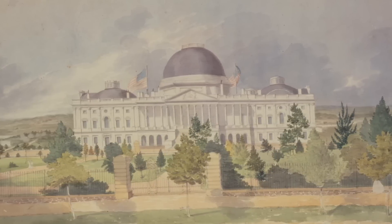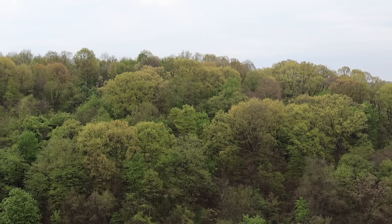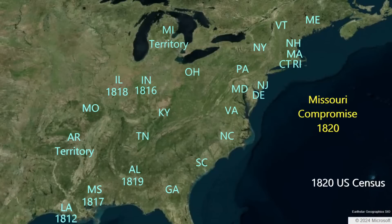Slavery had emerged as a national contest between north and south at this stage, with the Senate matching the admission of a slave state with the admission of a free state. In 1820, the Missouri Compromise paired the admission of free Maine — which until then had been part of Massachusetts — with the admission of slave Missouri, slated for 1821. We can see how the boundaries of the country changed dramatically between the 1810 and 1820 census, with the addition of several states in a short period.